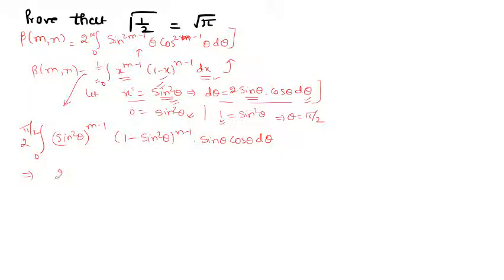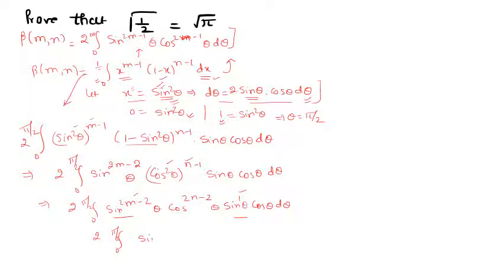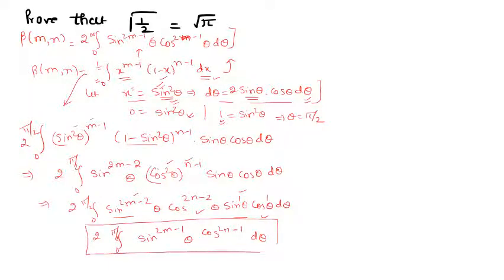Simplifying, we get the integral from 0 to π/2 of sin^(2m−2)(θ) · cos^(2n−2)(θ) · sin θ · cos θ dθ. Combining powers: sin^(2m−2) · sin gives sin^(2m−1), and cos^(2n−2) · cos gives cos^(2n−1). This is the trigonometric form we wanted to prove.